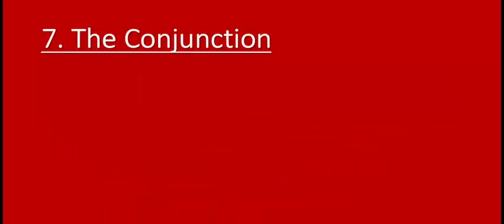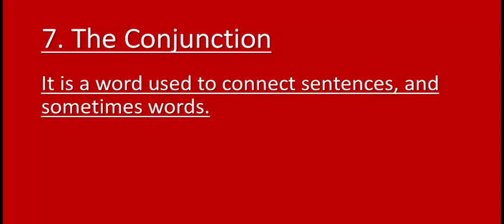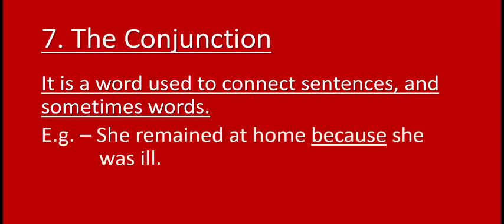Next is the conjunction. What is the conjunction? It is actually very simple — it is a word used to connect sentences and sometimes words. For example: She remained at home because she was ill. Here, the word because is connecting two sentences: she remained at home, and she was ill. If you don't know what a sentence is, I recommend you watch our sentence video first.